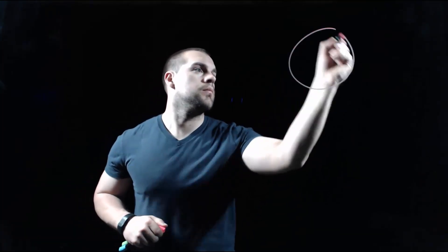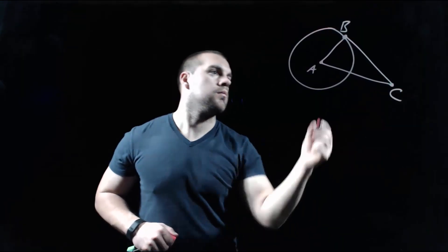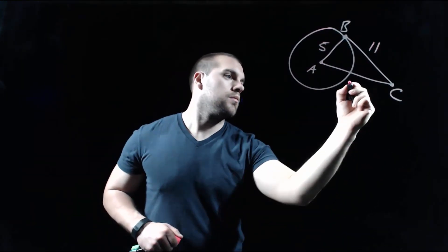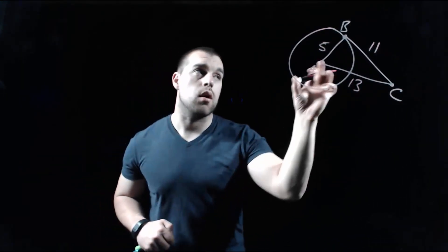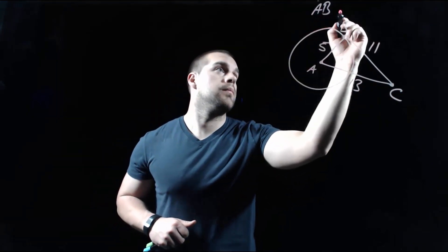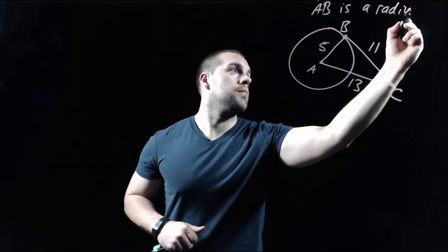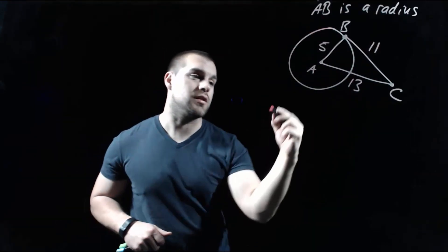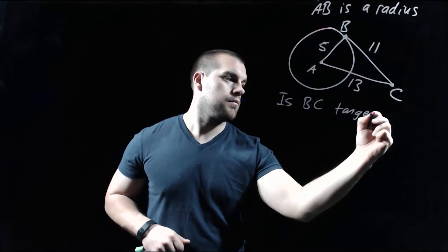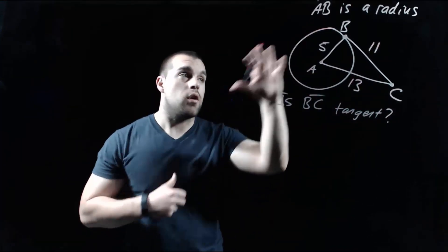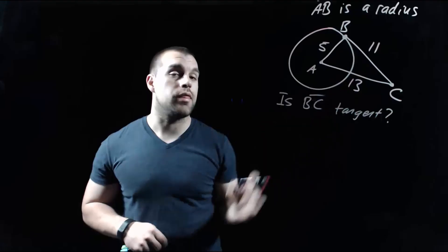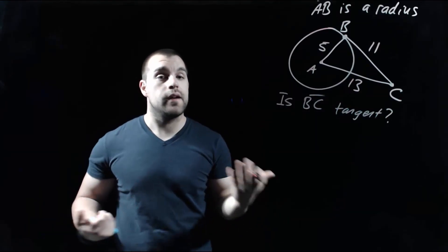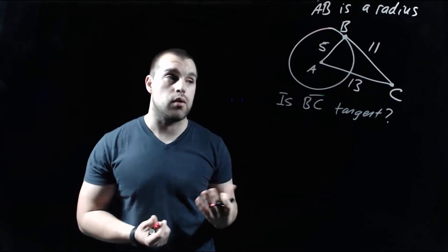This next example is very similar to the last one. In this picture, the radius is AB, and we're trying to check if segment BC is a tangent. We've got our triangle drawn out with lengths 5, 11, and 13, and we're going to run the Pythagorean theorem to check if this makes a right triangle.